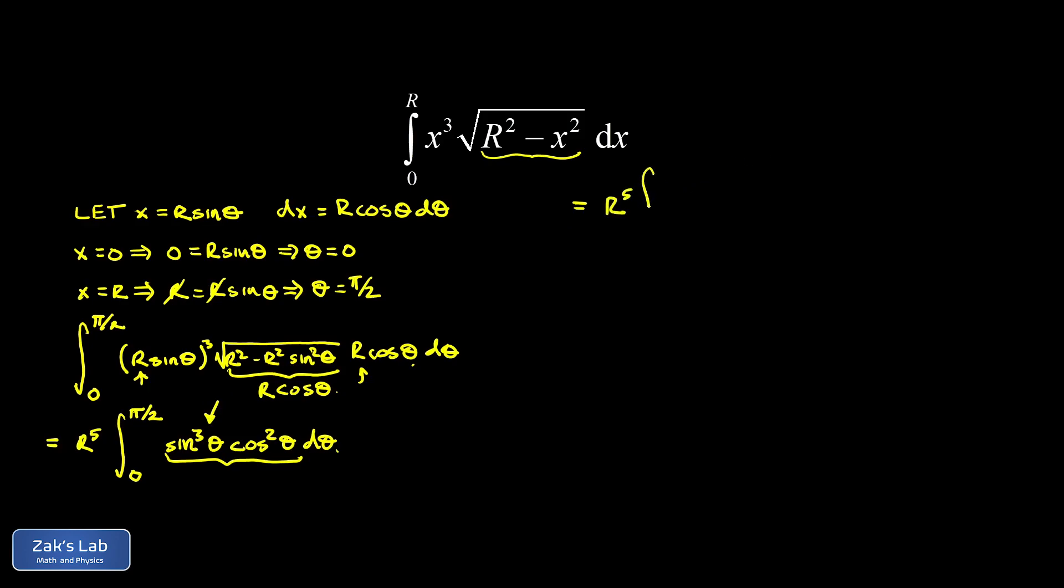So here I have r to the fifth integral from 0 to pi over 2. And the point is to end up with a single isolated factor of sine theta, because that's the derivative of cosine. And I split off a sine squared to get this done, but sine squared can be replaced with 1 minus cosine squared. So this whole piece right here started at sine cubed theta, and then we have the cosine squared theta term left over in our differential d theta.